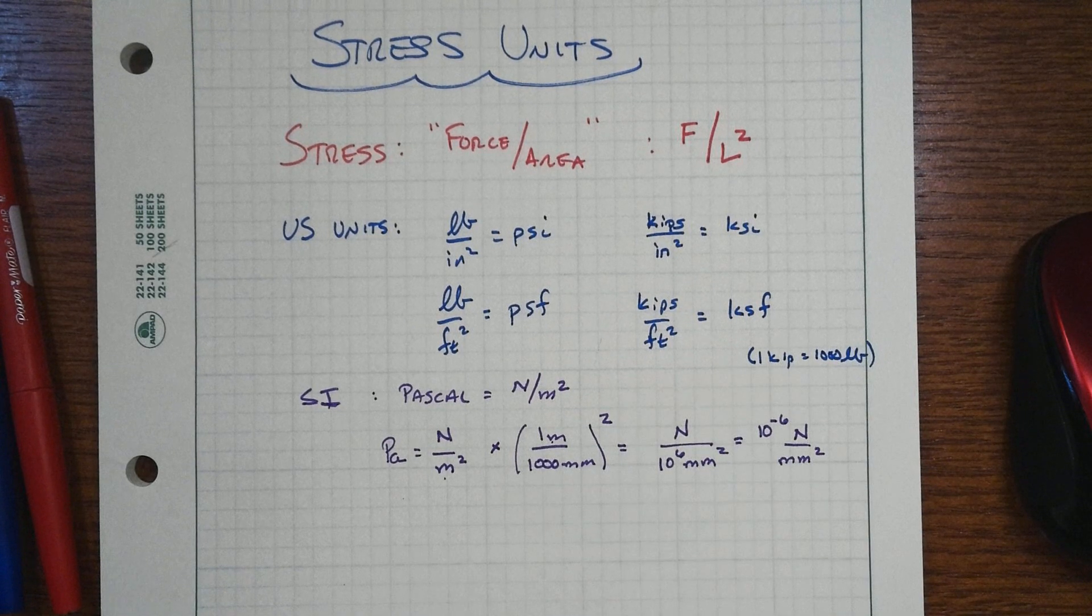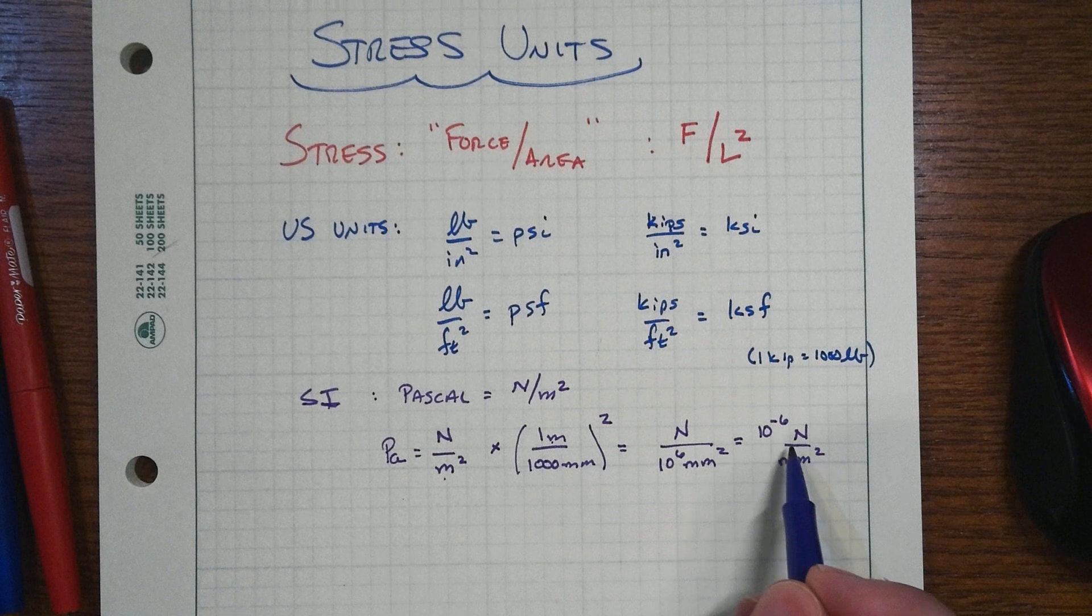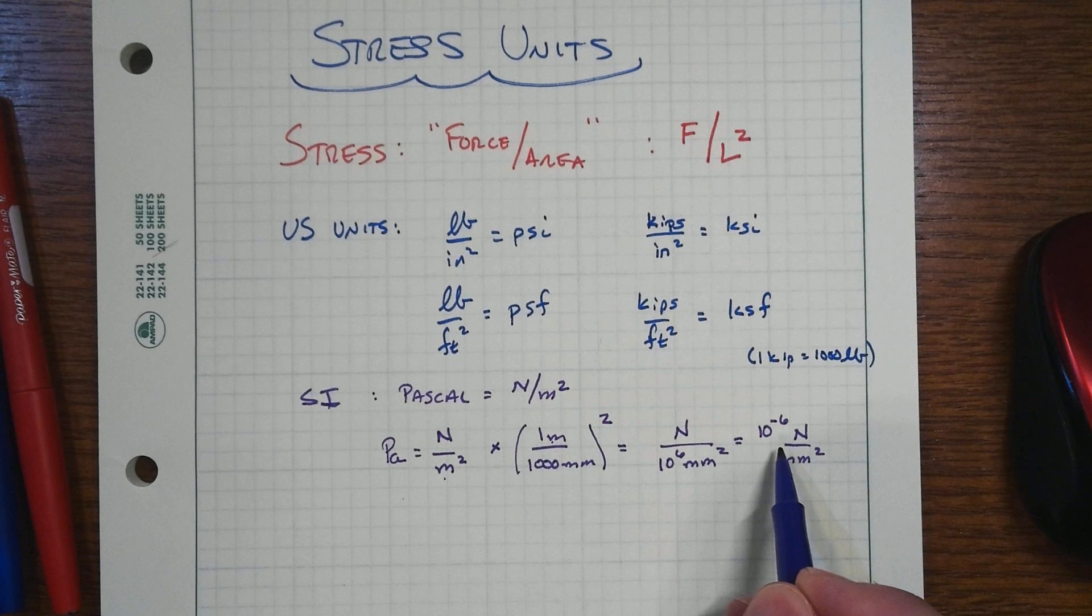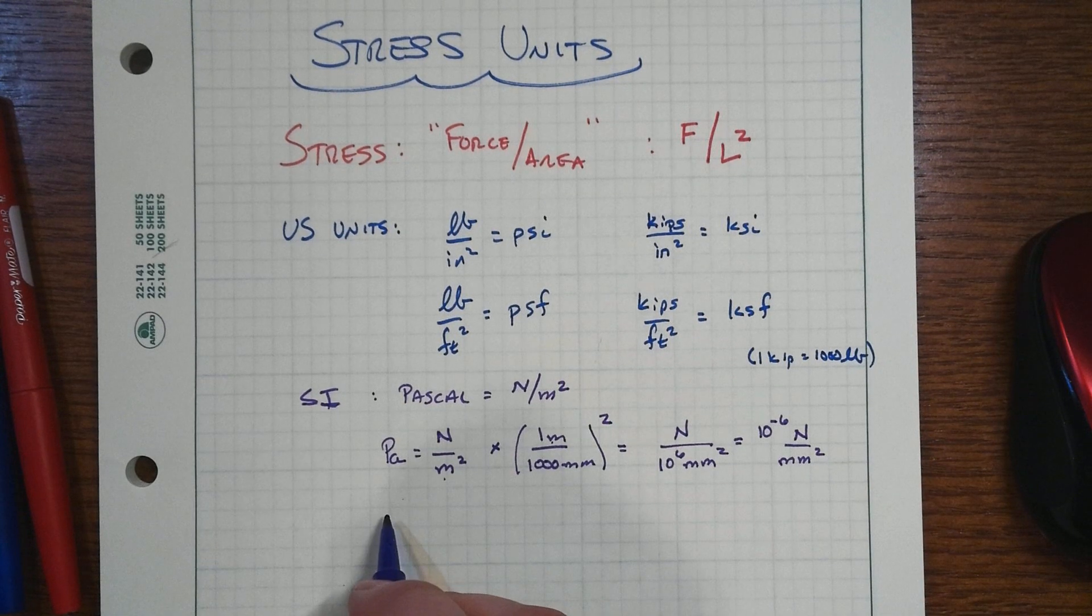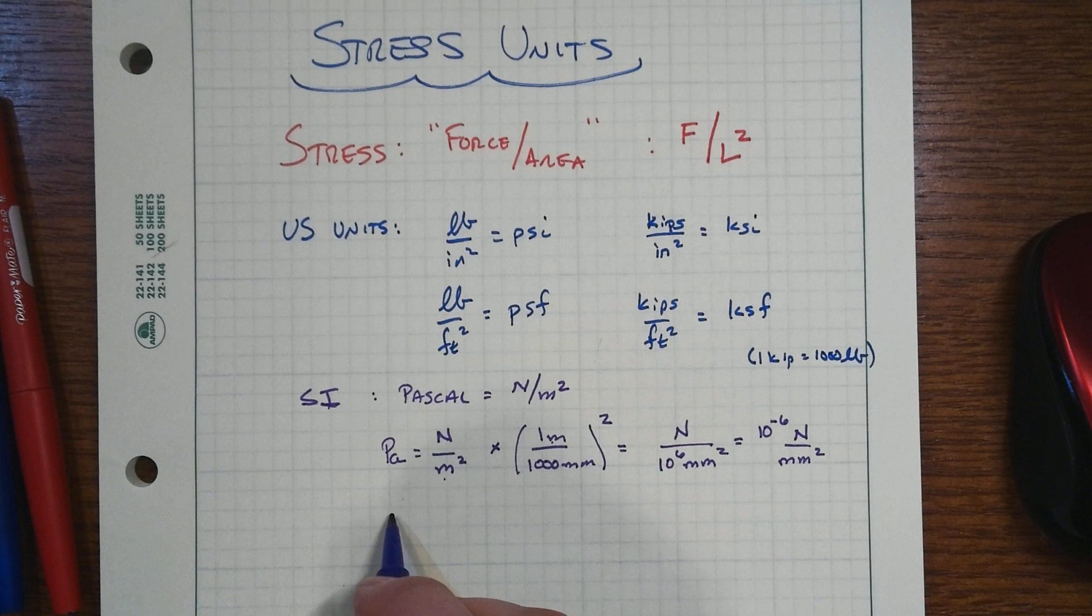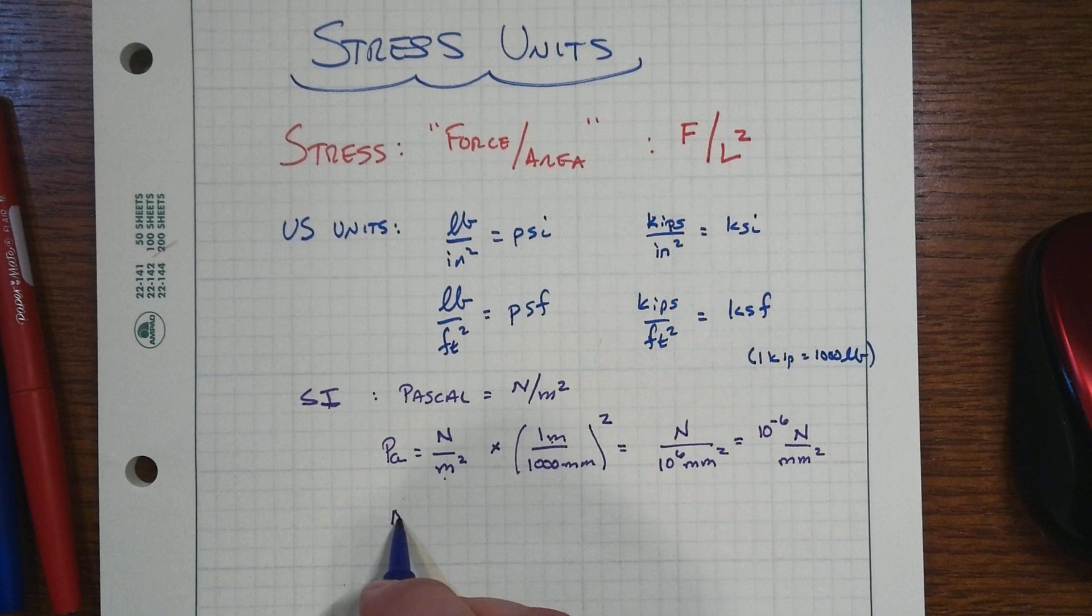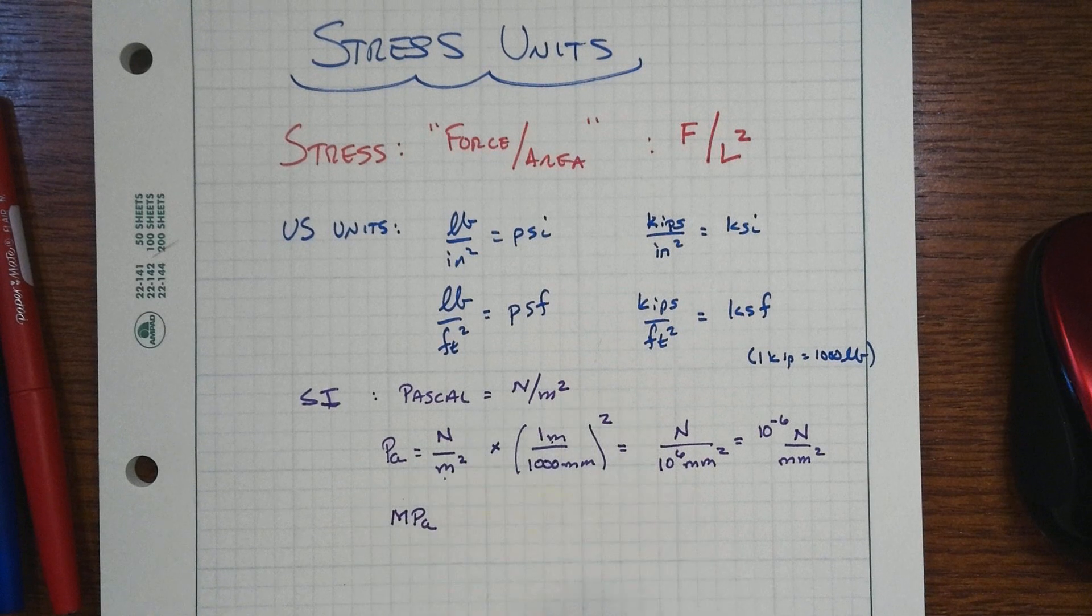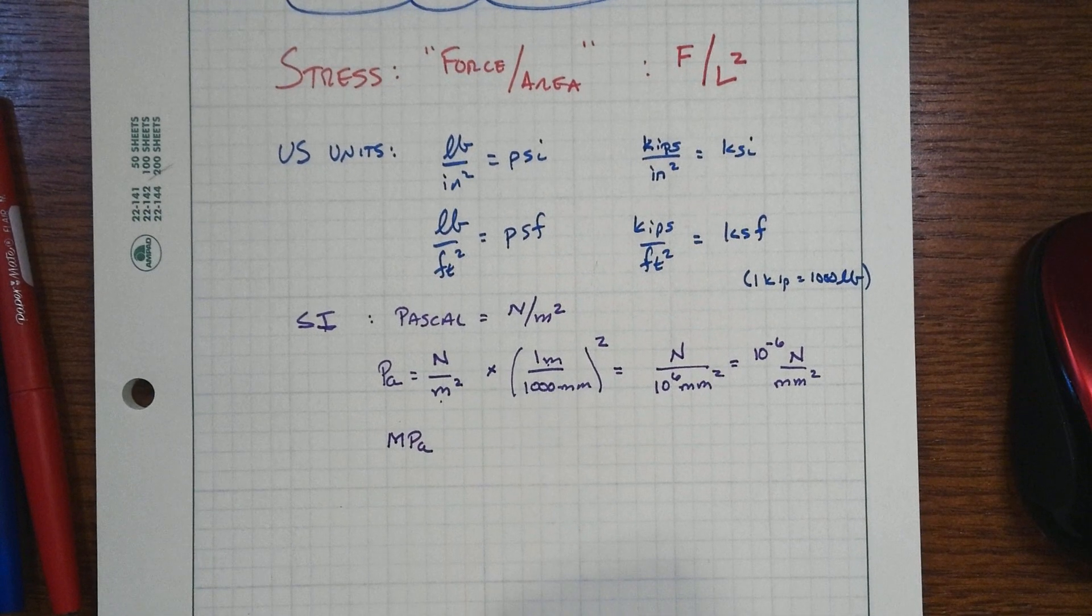But now, note how this will begin to play out. Because this is actually a very small kind of number that's running around. Well, you're going to see that steels will have strengths on the order of 70 megapascals. So let's just deal with one megapascal and see how that would work out.